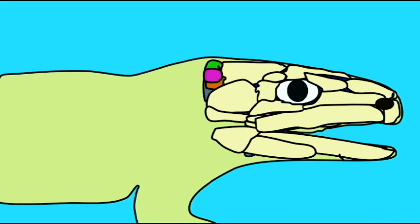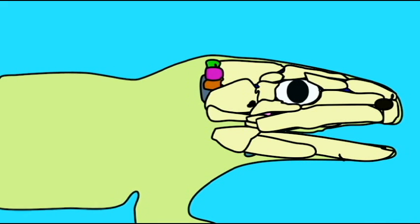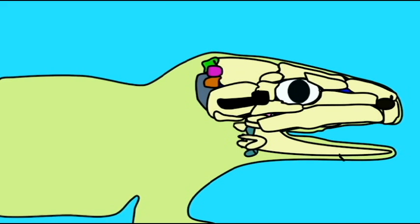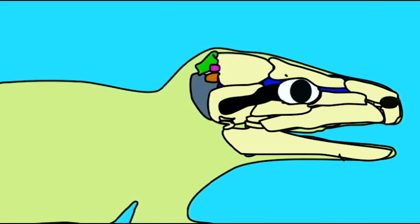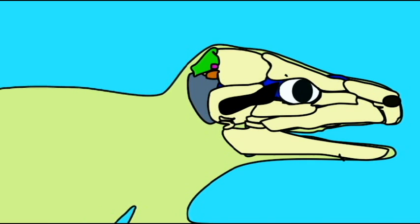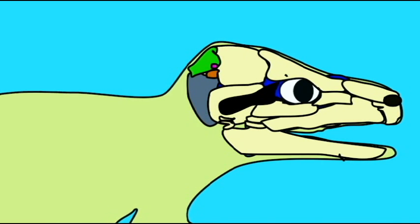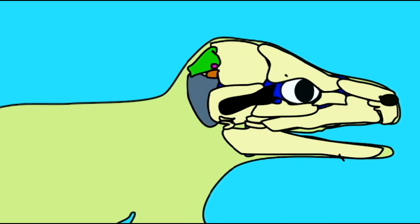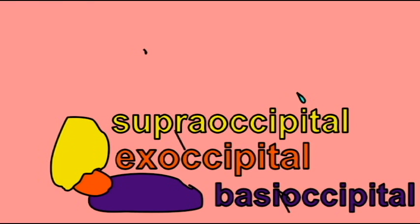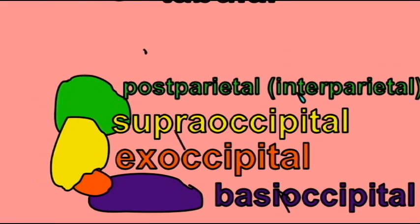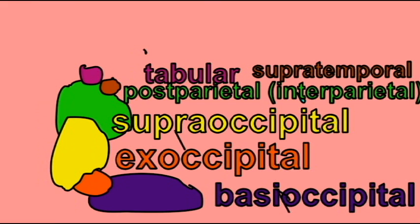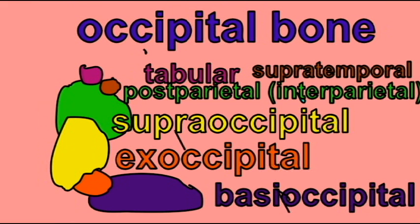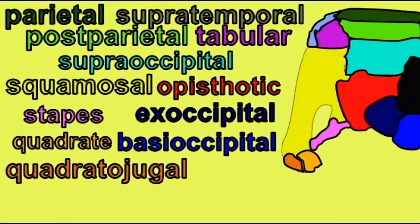Primitive reptiles alive today, and ancestral reptiles in the fossil record, possess many small bones in the occipital region. They are known as the basi-occipital, exo-occipitals, post-parietals, tabulars, etc. The fossil record indicates that over long periods of time, these small bones fused to gradually form the single mammalian occipital bone, thus making the mammalian occipital bone a composite bone — a bone formed by the fusion of many smaller bones.